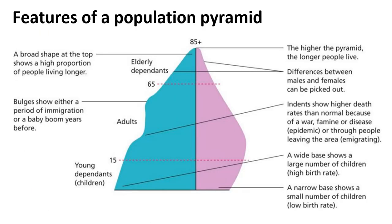A population pyramid usually has a different shape depending on the level of development of a country. At the bottom, between 0 to 15, you have the young dependent population. If the young dependent population has a wide base, it shows a large number of children, indicating a high birth rate. If it has a narrow base, there is a small number of children, which means a low birth rate.